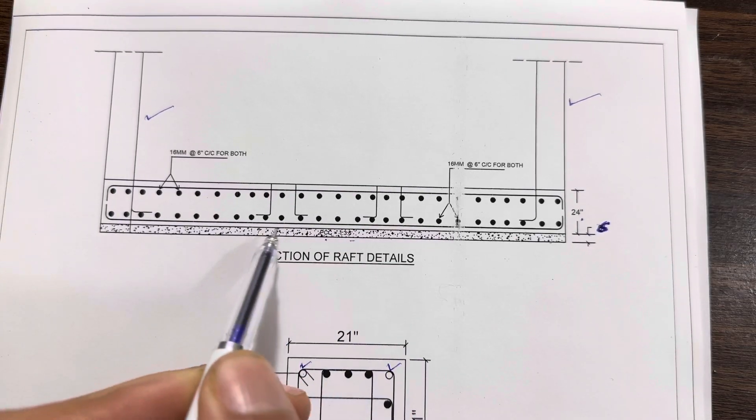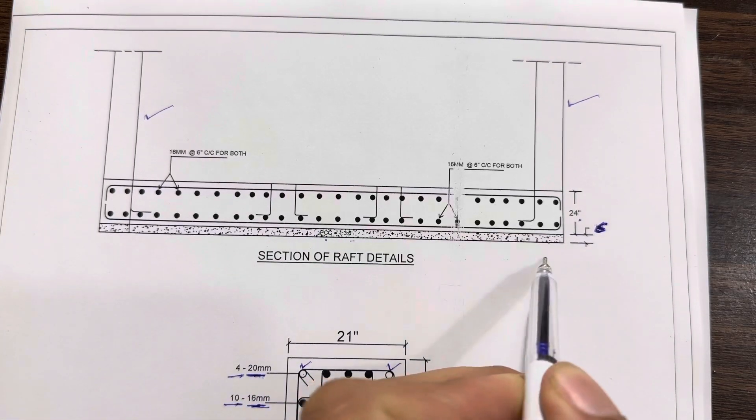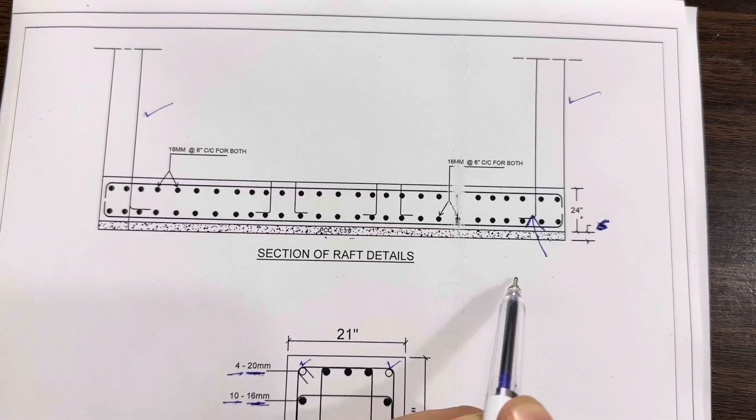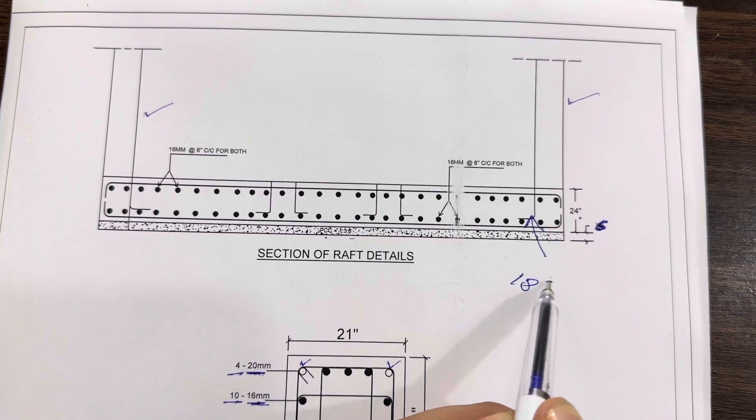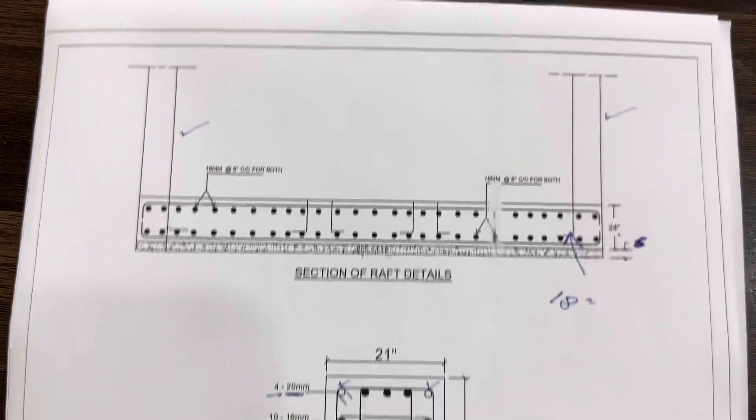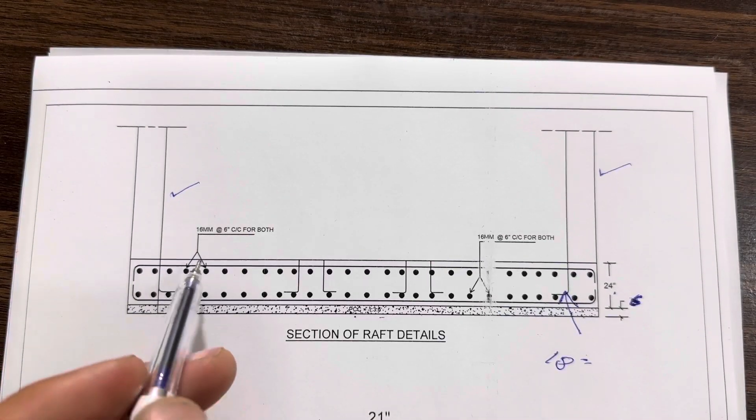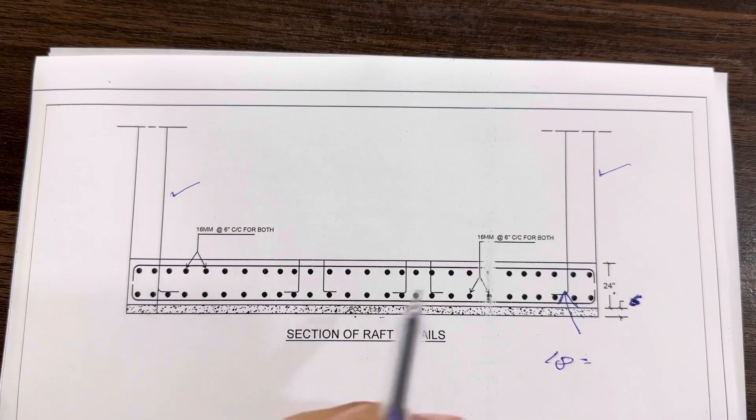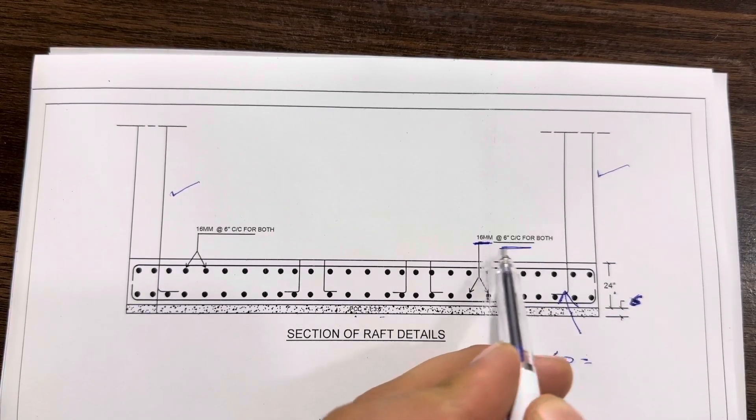We have the steel reinforcement and the legs you can see for the column which should not be less than 18 inches because size of the column is 21 by 21 inches. At the bottom the dia is 16 millimeter with the spacing of six inches for both direction, for main bars also for distribution bars.